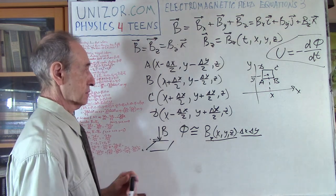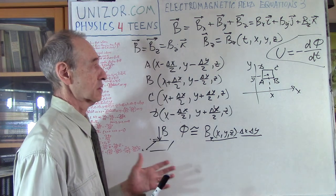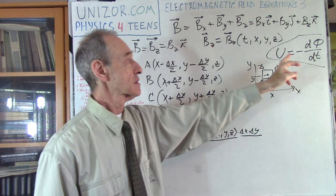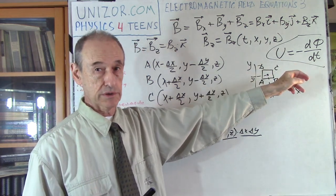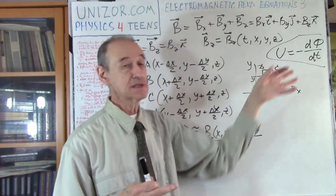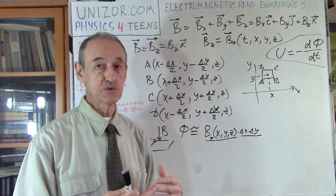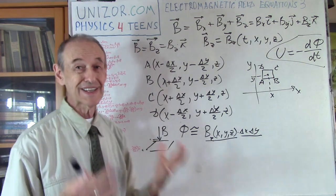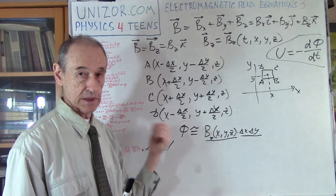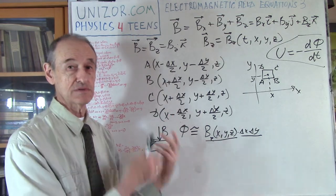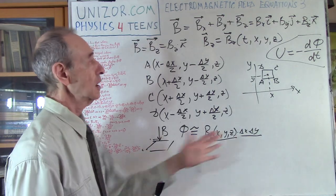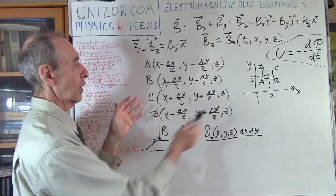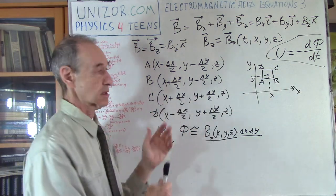This is the connection: the flux depends on the magnetic field, and the electromotive force is the electric field characterization. This is the beginning of Maxwell's equations, connecting the two intensities — B intensity of the magnetic field and E intensity of the electric field.